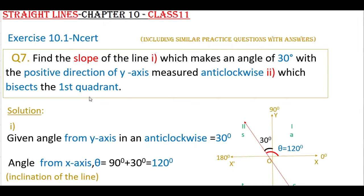The second one is which bisects the first quadrant. So these types of problems, you have to check first which axis the inclination of the line is given from, and in which direction—that is positive or negative, anticlockwise or clockwise.